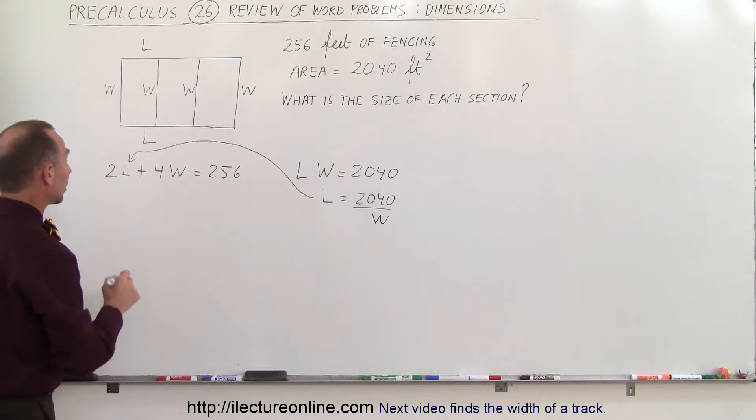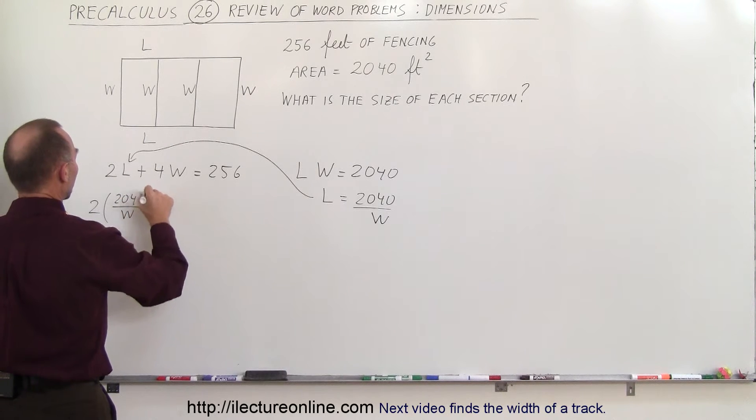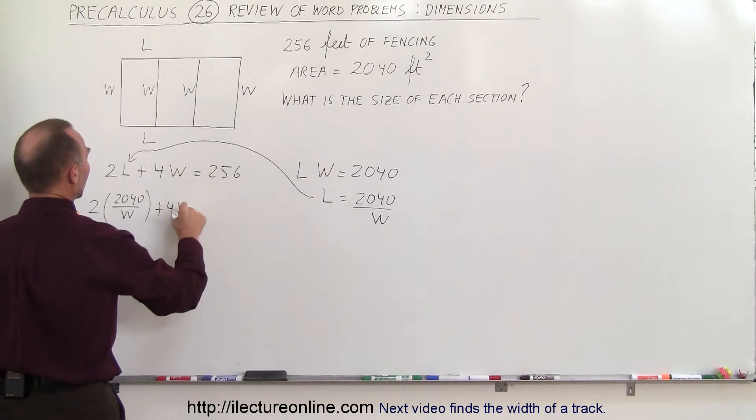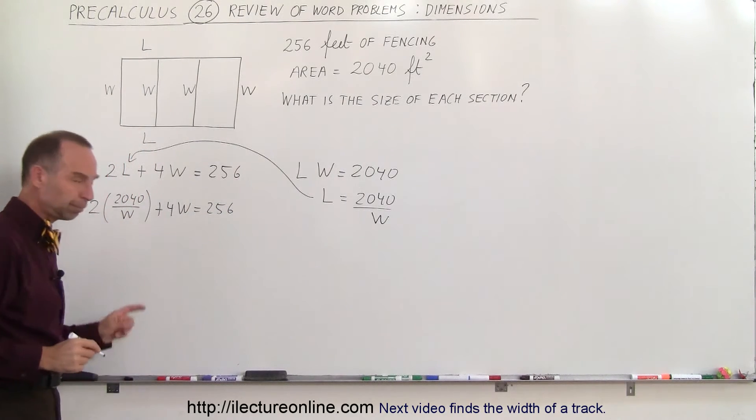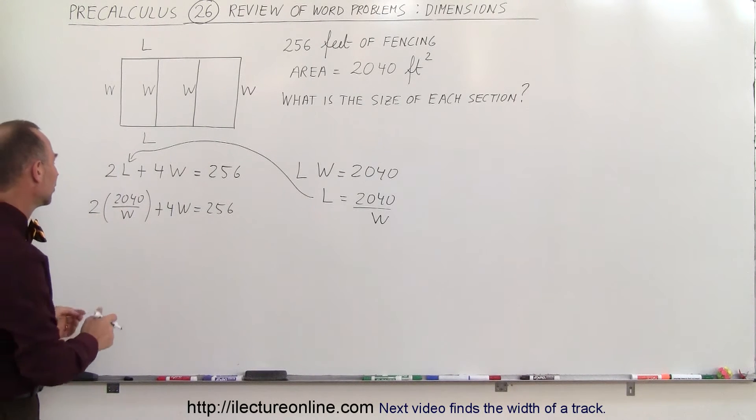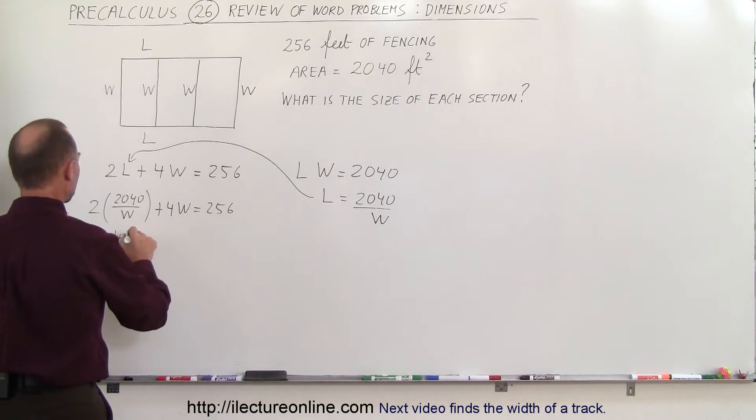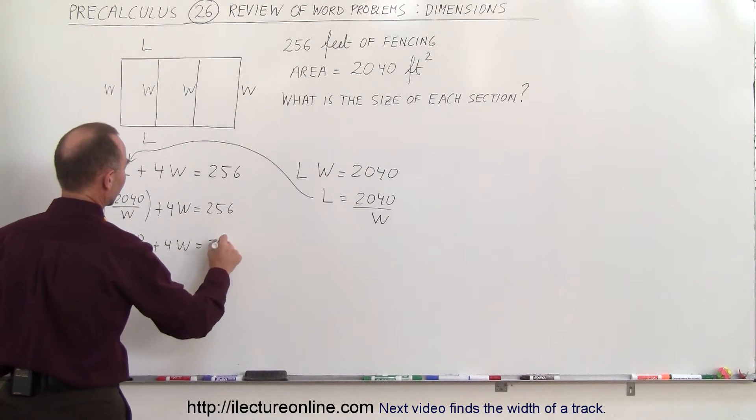If we do that we get the following equation. So 2 times 2,040 divided by the width plus 4 times the width is equal to 256. Now we have to solve this equation for W. So what we want to do, first let's get rid of the parentheses. So this can be written as 4,080 divided by W plus 4 times W is equal to 256.